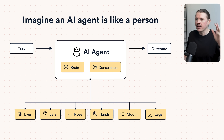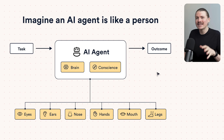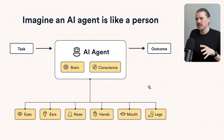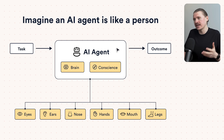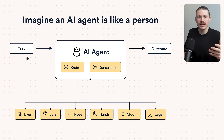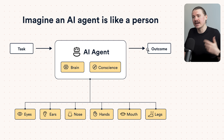AI agents are often called digital employees or digital workers. To understand the different components of an AI agent, let's imagine that an AI agent is like a person. A task is coming in, our AI agent will work through that task and eventually reach an outcome. So it could be a task like 'go and tidy your room' — we then process that task and reach an outcome, which will be a tidy room, but more importantly, happy parents.